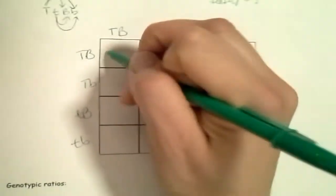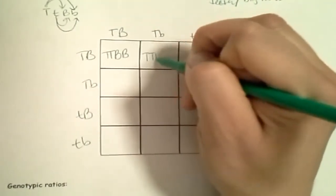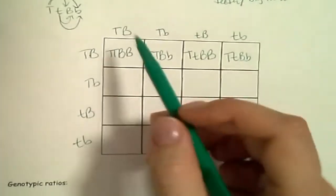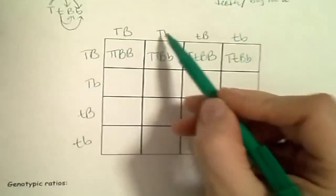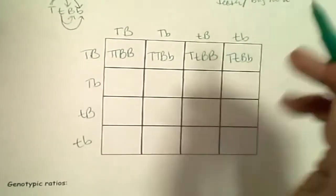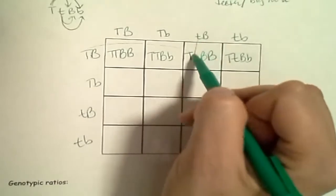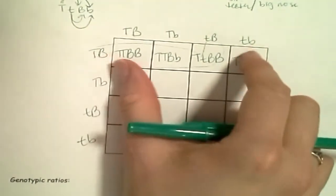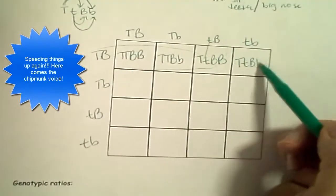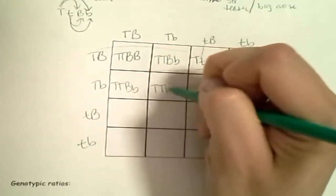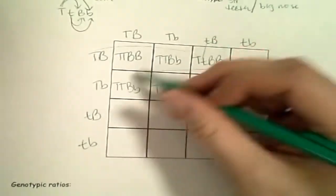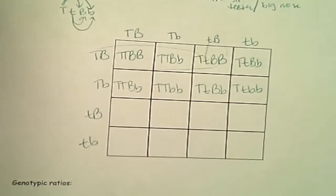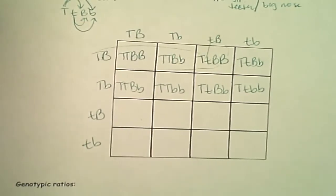Now we multiply — big letter first. First row: big T big T big B big B; big T big T big B little b; big T little t big B big B; big T little t big B little b. Next row: big T big T big B little b; big T big T little b little b; big T little t big B little b; big T little t little b little b. Big letter always goes first. You can even use your fingers to figure out what goes where. Try the last two rows yourself, pause, then check your answer.